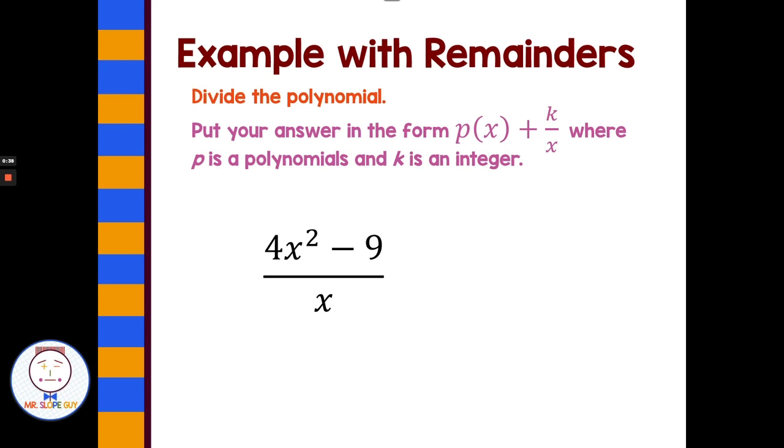All right, let's look at a different format. If we're asked to divide the polynomial and put your answer in the form p of x plus k over x, where p is a polynomial and k is an integer. Well, the format looks weird, different than what we're used to seeing division as. But let's look and see how this works.